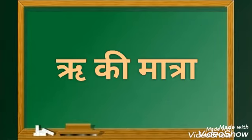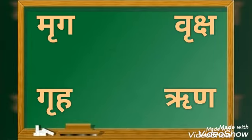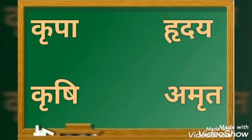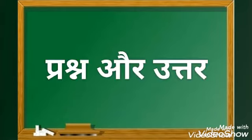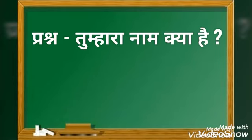ऋ की मात्रा: मृग, गृह, वृश्चिन, कृपा, कृषि, हृदय, अमृत, प्रश्न, त्र्स्र.